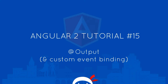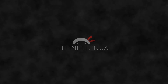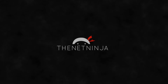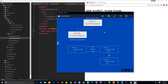Welcome to your 15th Angular 2 tutorial. In this video we're going to talk about the output decorator and custom event binding. In the last tutorial we passed data from the root component down the tree to the home component using a custom property binding and the input decorator. Now we want to reverse that process — passing data from the home component up the tree to its parent using a custom event binding and the output decorator.